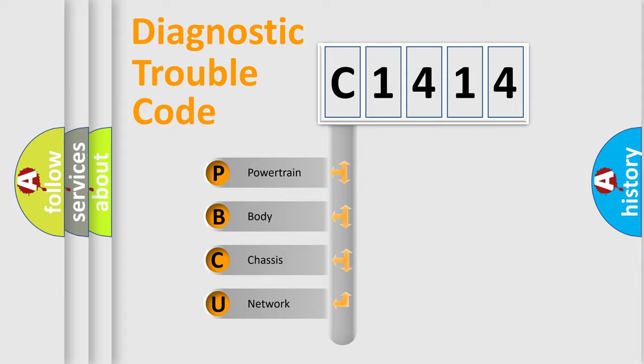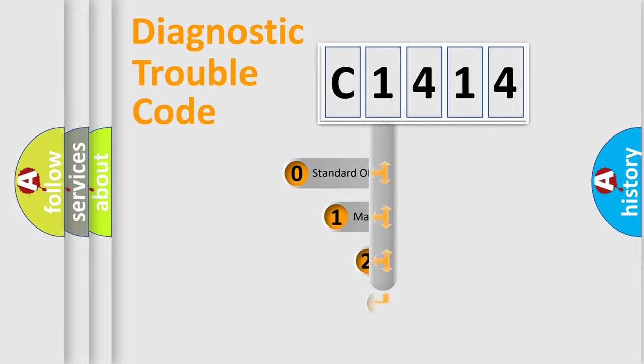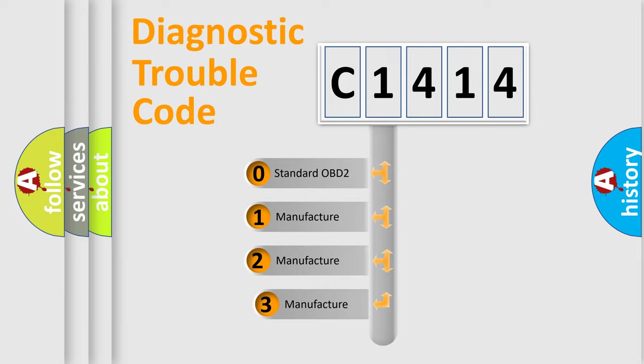We divide the electric system of automobile into four basic units: Powertrain, Body, Chassis, and Network. This distribution is defined in the first character code.